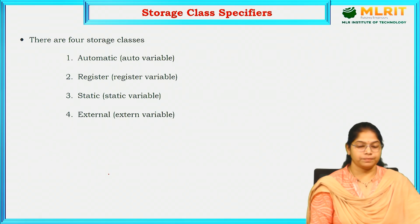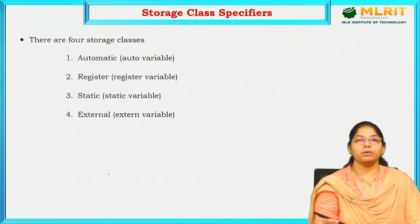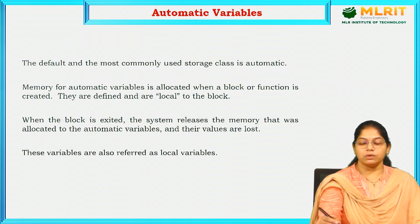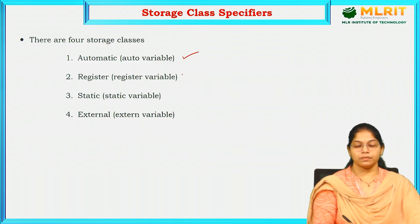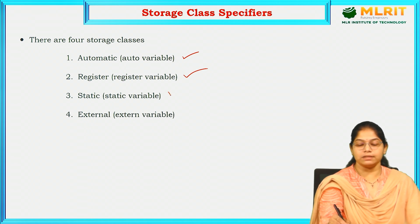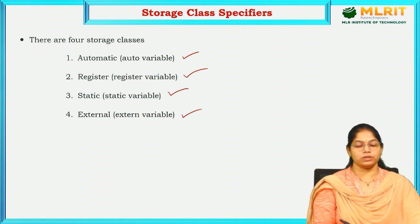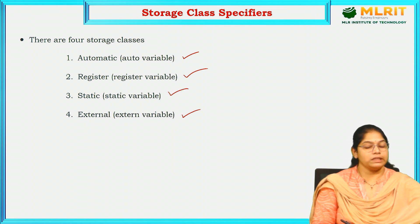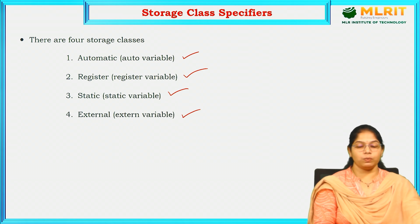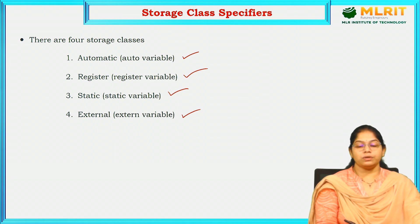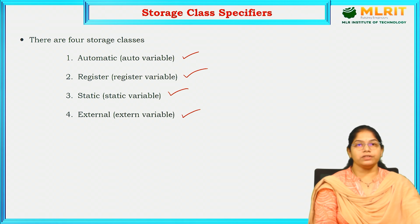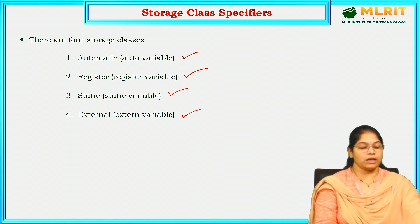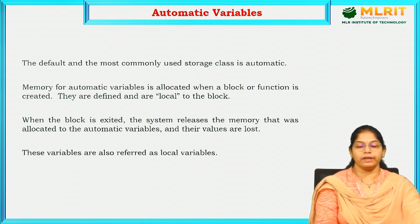There are four types of storage classes: automatic storage class, register storage class, static storage class, and external storage class. In automatic, the variables are called auto variables. In register, they are register variables. In static, those are static variables. In external storage class, variables are called external variables.